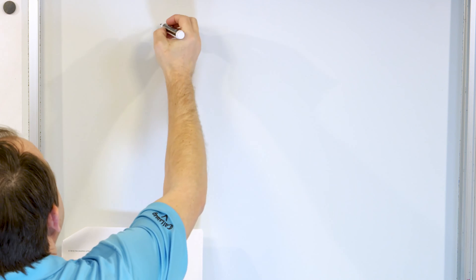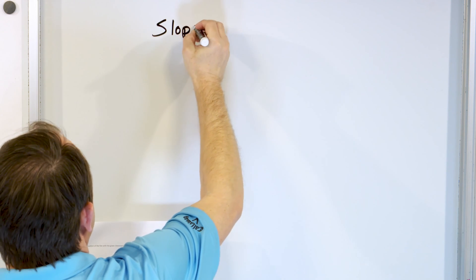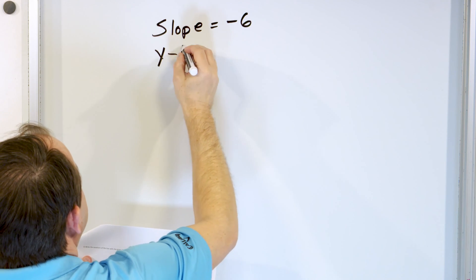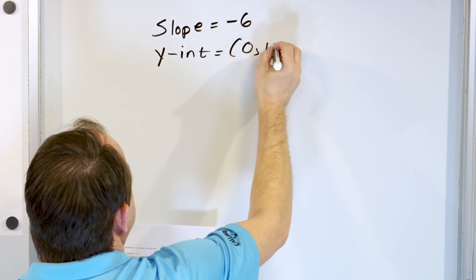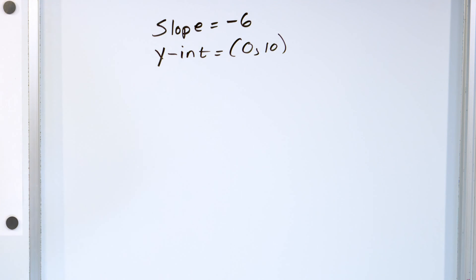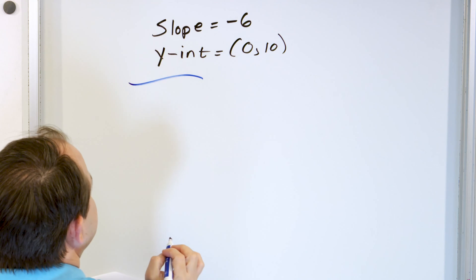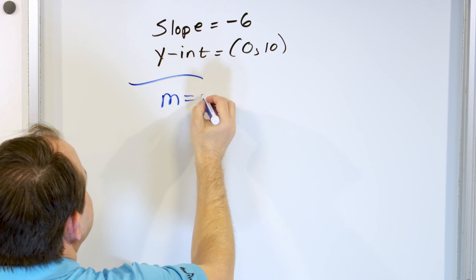Let's take a look at problem number two. Now, in this case, I'm going to do something a little different. Instead of giving you a graph, I'm going to tell you that the slope is just equal to negative 6. And I'm going to tell you that the y-intercept is zero comma 10. And from this, I want you to write down the equation of the line. Well, if the slope is negative 6, then you just know that m is negative 6.